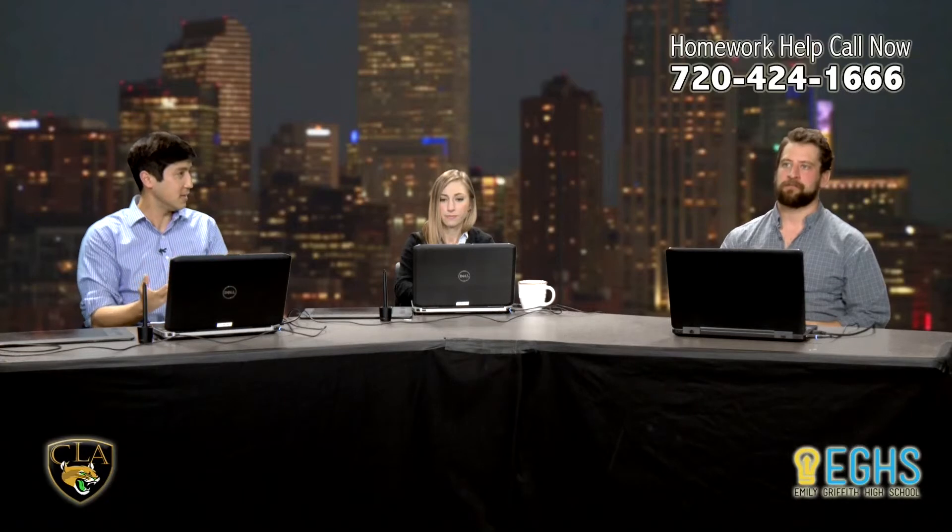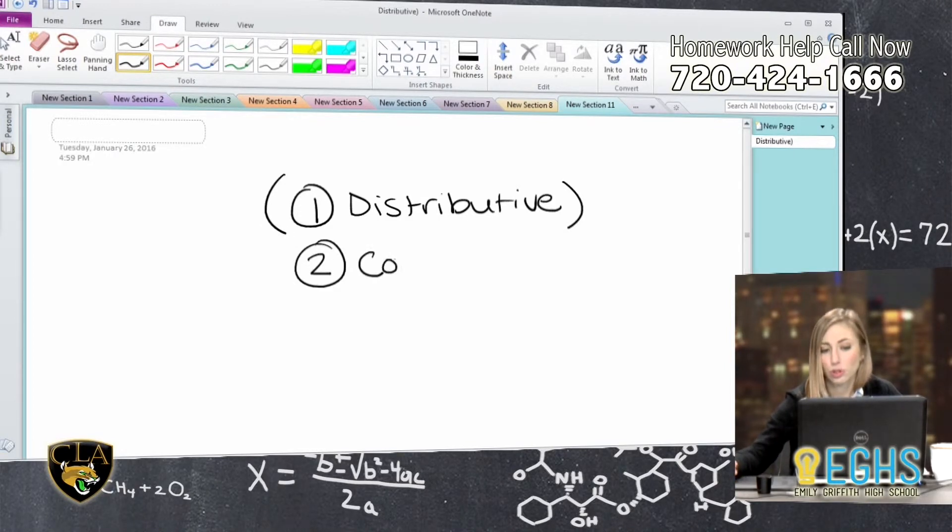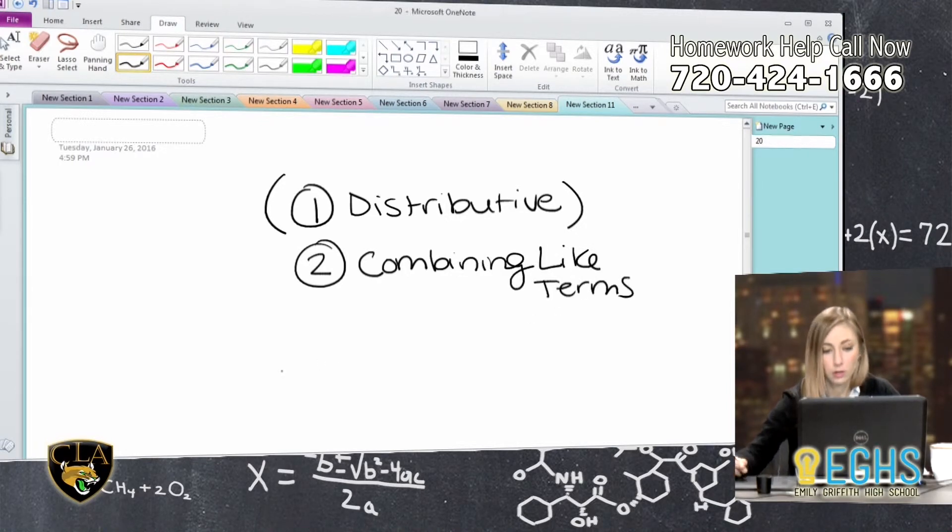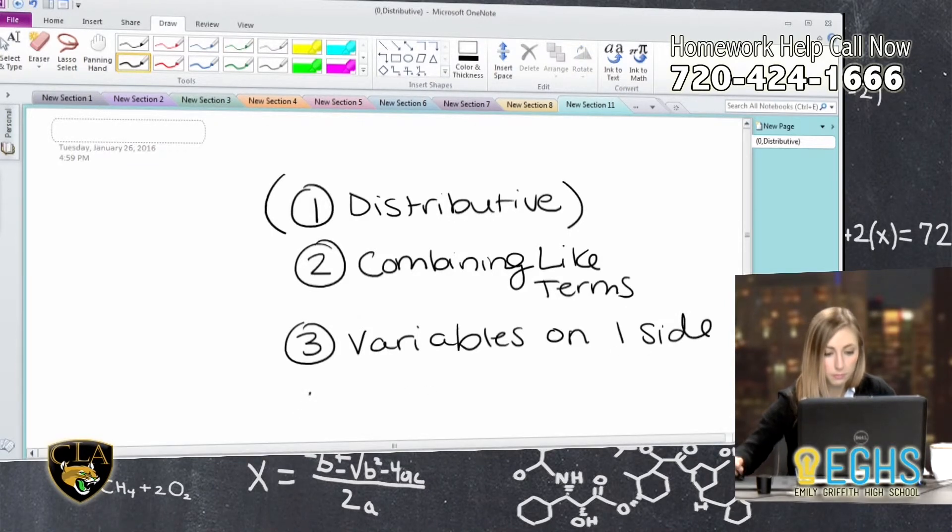These problems are interesting because I feel like they're very intimidating to a lot of students. But the process, no matter how big or small, the problem is like the process is really the same of simplifying and combining like terms. What would you say if you were to generalize that process? Like you would say distributive property first. Sometimes I've said distributive if necessary. But I think if you said simplifying, that might be a more inclusive term because that would include distributing. But yeah, that's what I do. Distribute, combine my like terms, make sure your variables are on one side.